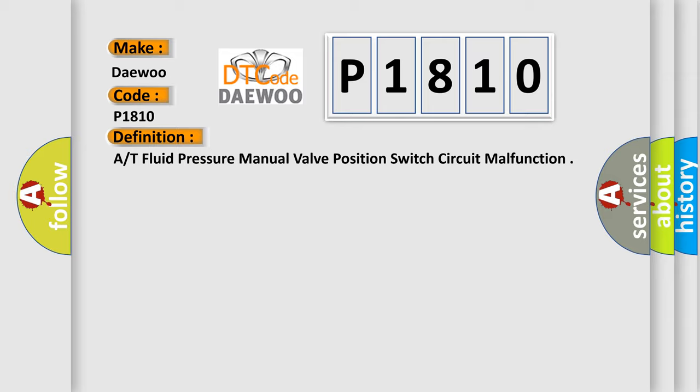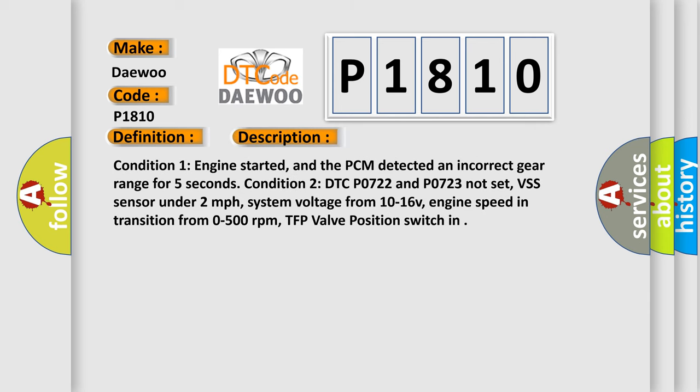And now this is a short description of this DTC code. Condition 1: engine started, and the PCM detected an incorrect gear range for 5 seconds. Condition 2: DTC P0722 and P0723 not set, VSS sensor under 2 miles per hour, system voltage from 10 to 16V, engine speed in transition from 0 to 500 revolutions per minute, TFP valve position switch in.